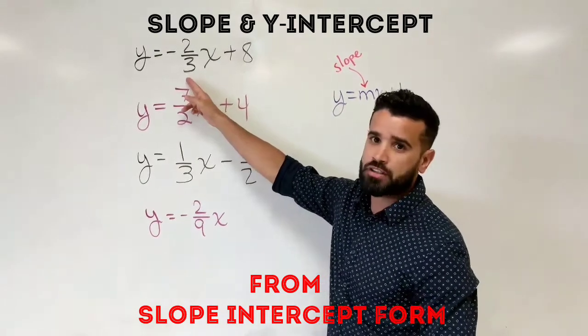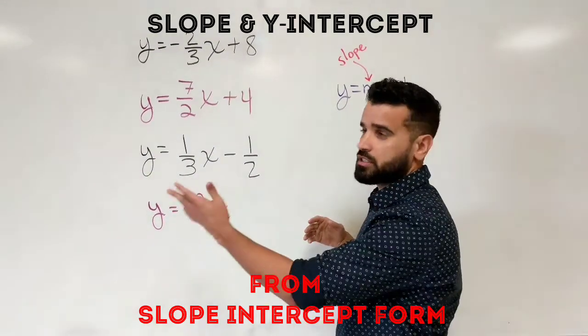Our slope is negative two-thirds. That means our line is going to rise from the right towards the left and it's going to intercept the y-axis at positive eight. That's our y-intercept.